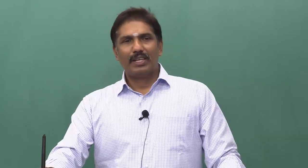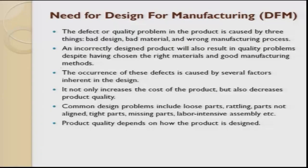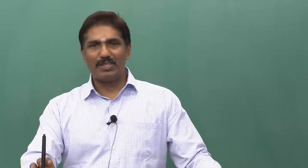Why do we need Design for Manufacturing? The defects or quality problems in a product are caused by three things: bad design, bad material choice — that is why we had an exclusive lecture on selection of materials — and also the weightage given for each property. In reality, there are normally two or three different properties playing an important role towards the outcome of the product to keep the customer satisfied.